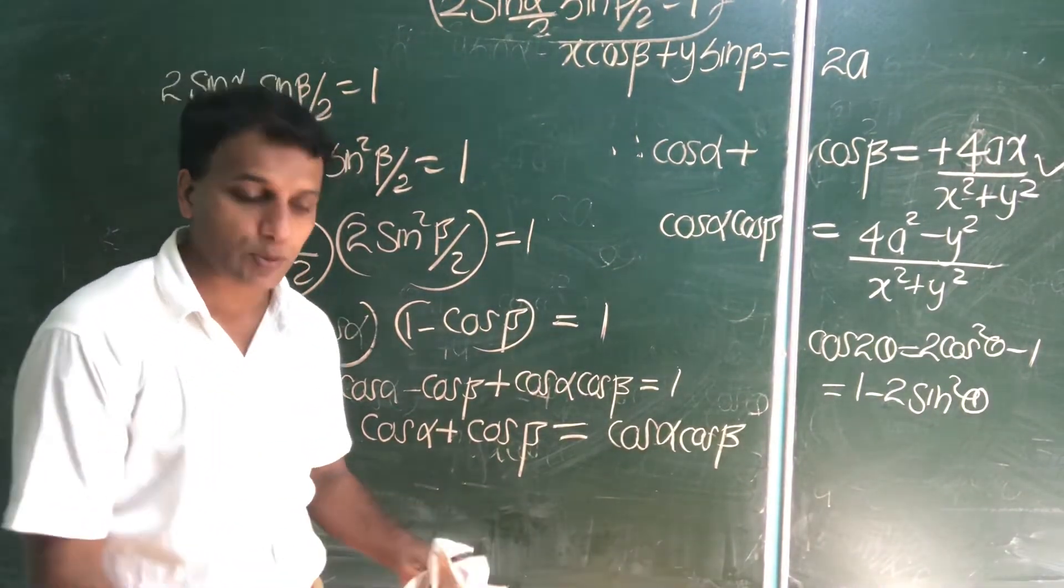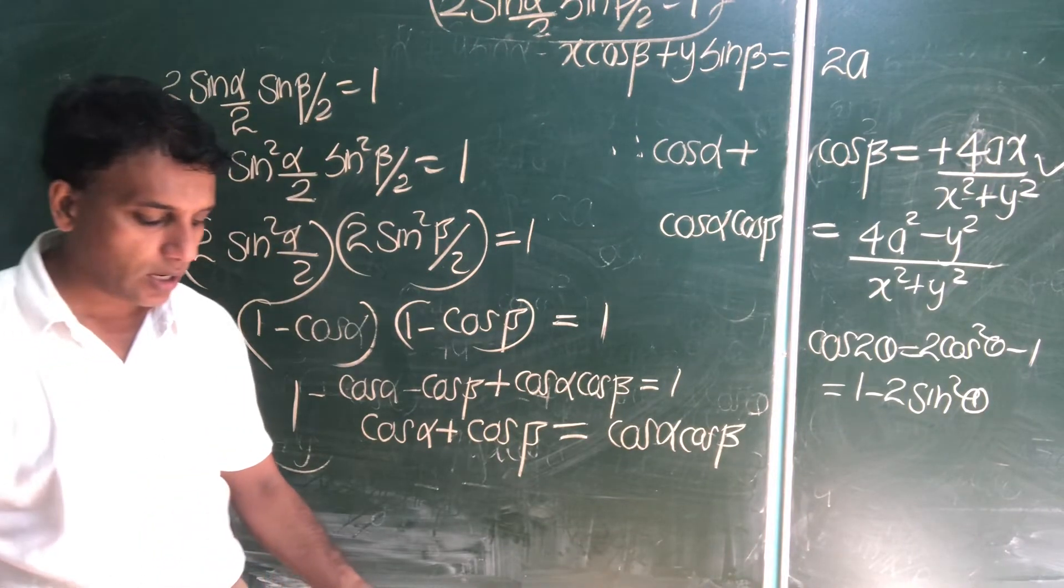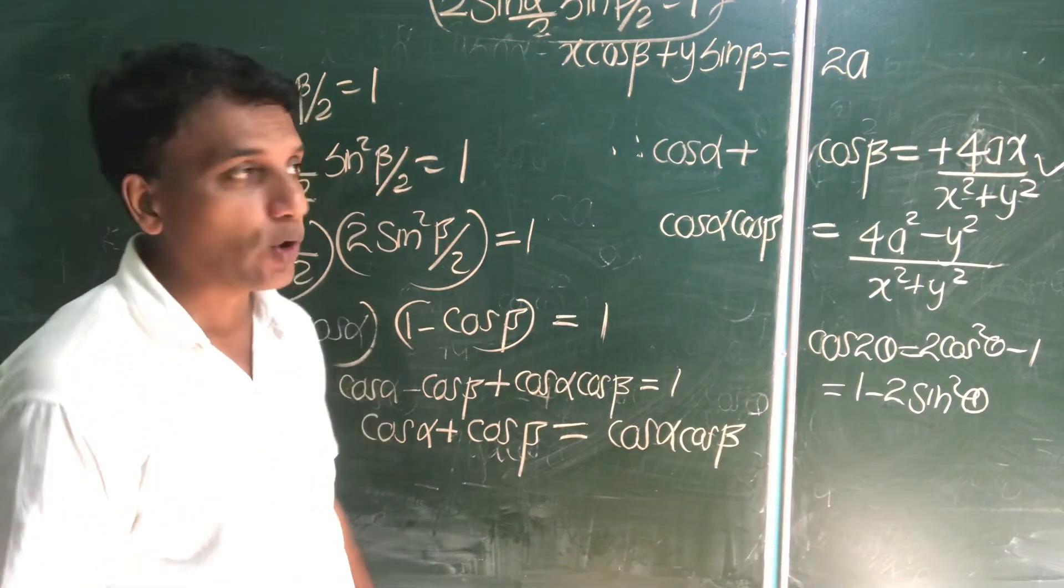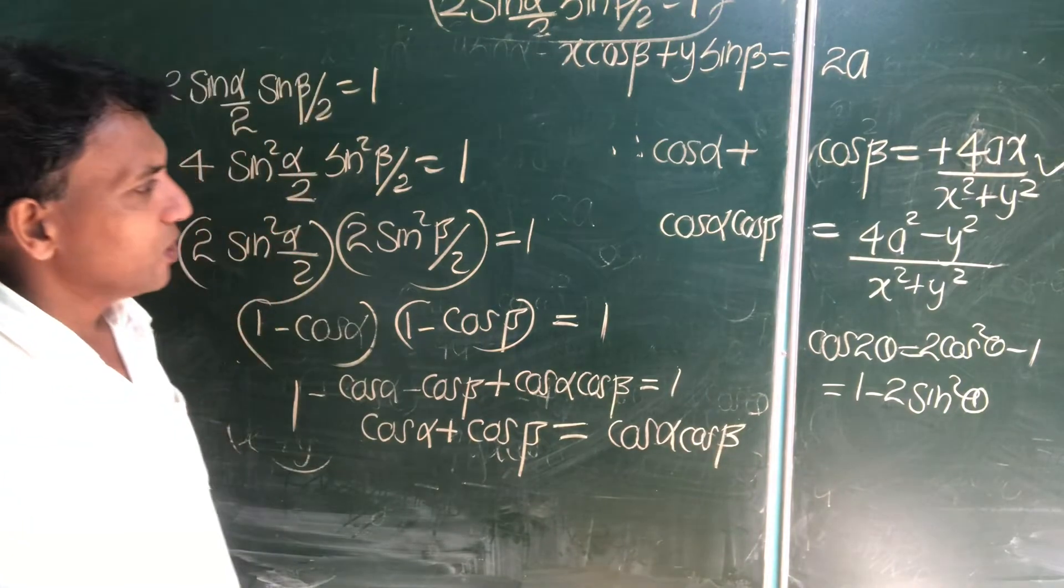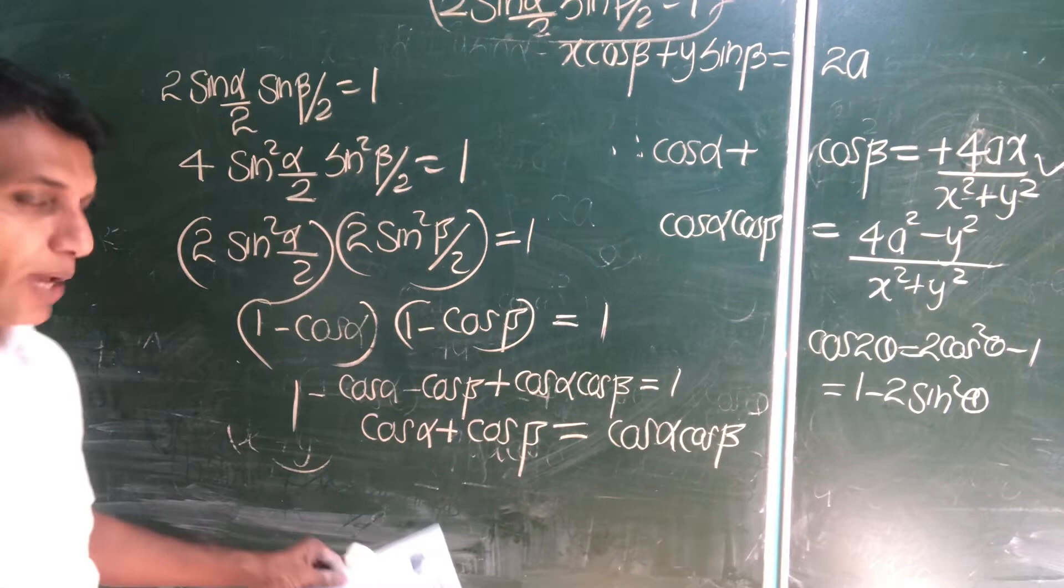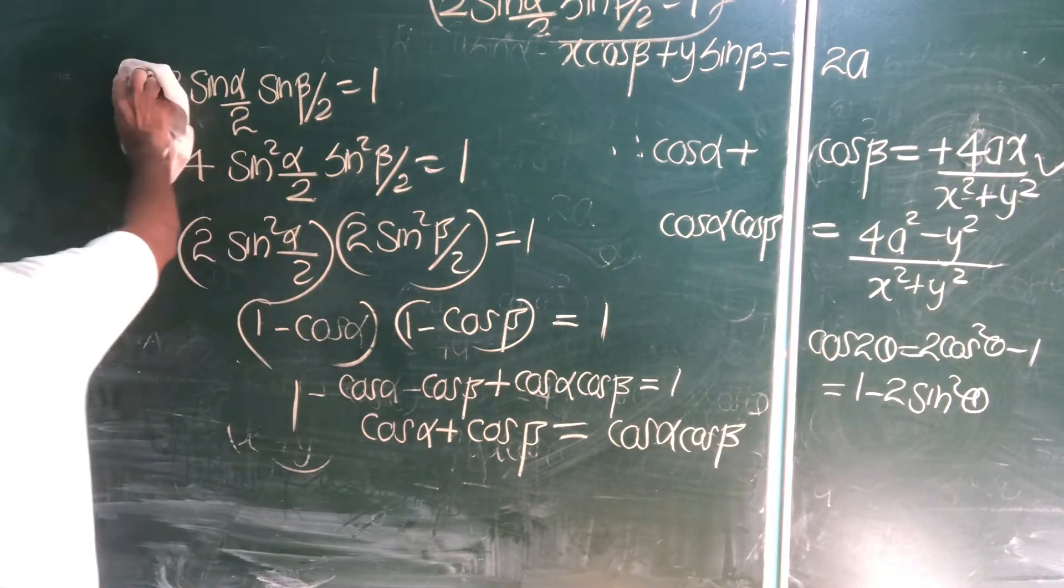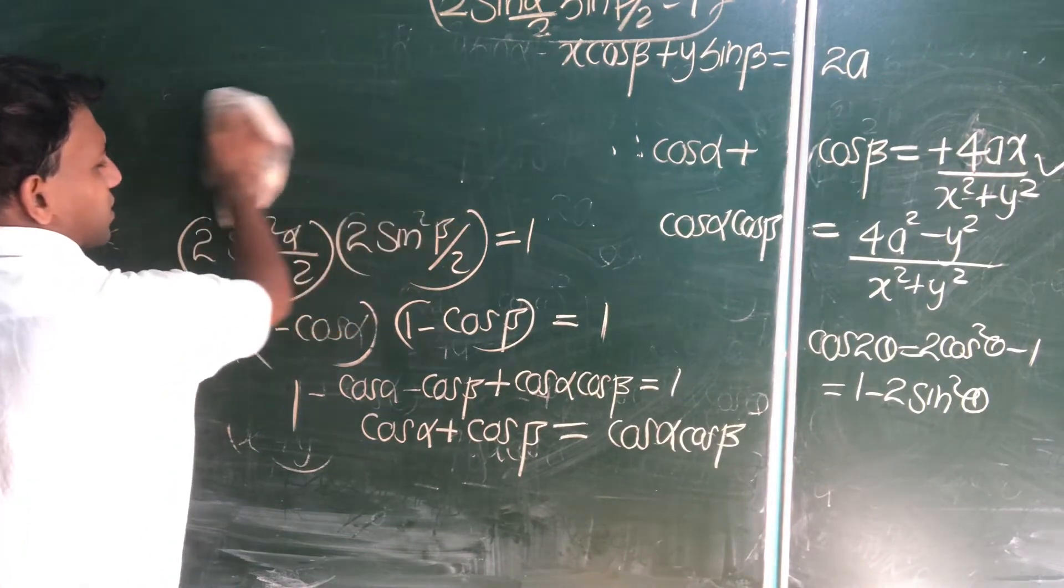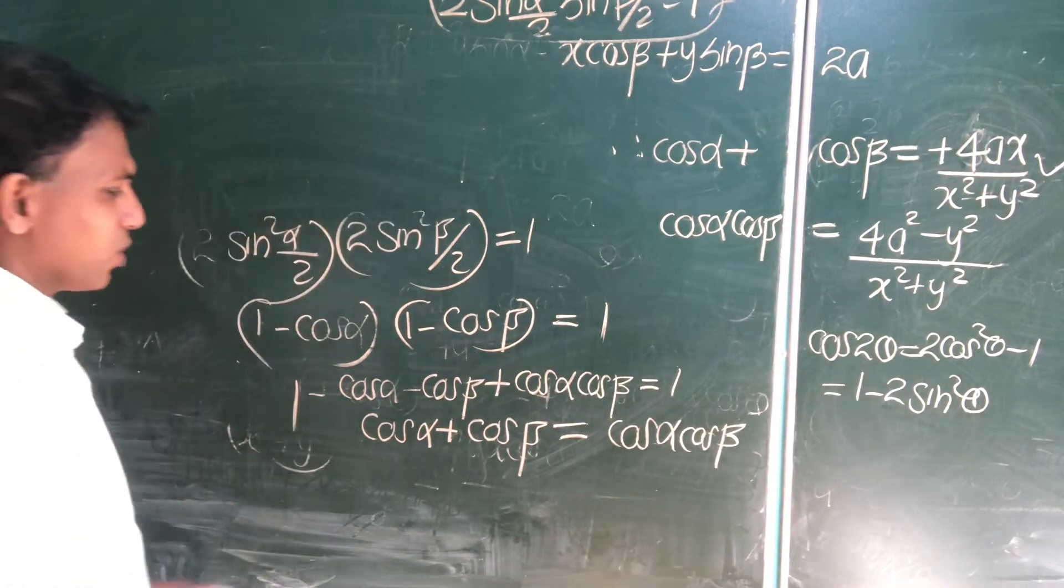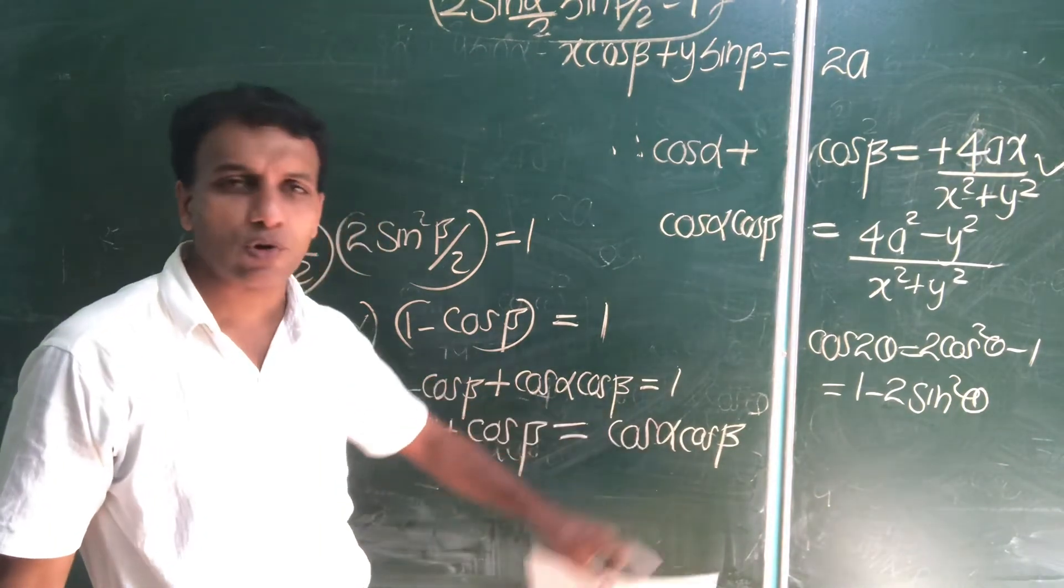So, there's a first part. First part is what? Y square equal 4A into A minus X. So, how that one? Very simple part. Now, you know cos alpha plus cos beta equal to cos alpha into cos beta.